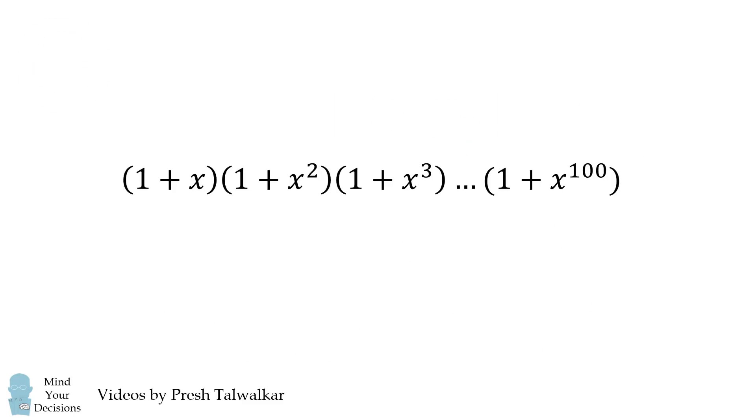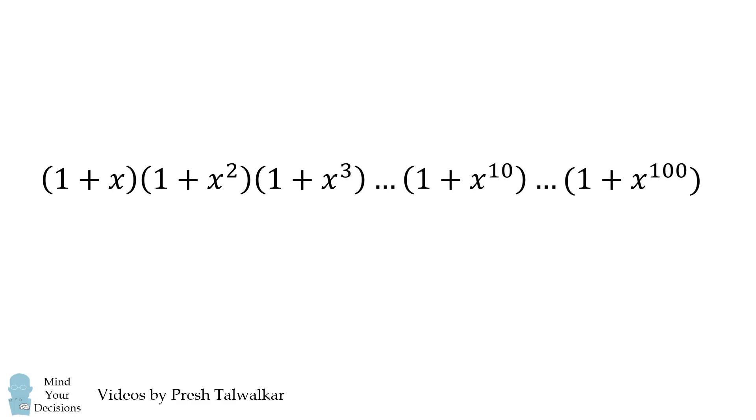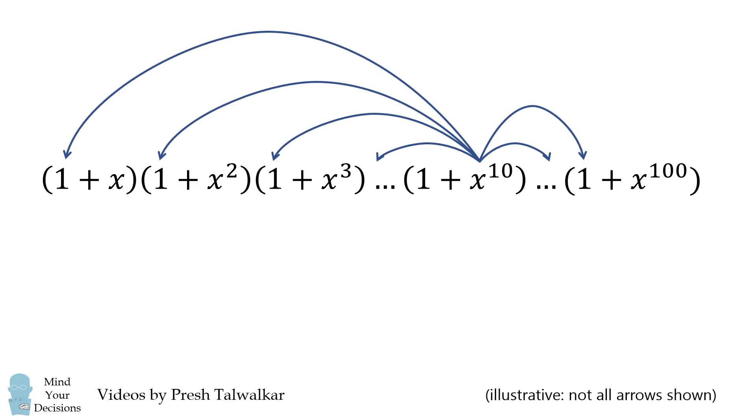Let's analyze this binomial product. Consider the term 1 plus x to the power of 10. What happens if we multiply x to the power of 10 by 1's in all of the other binomial terms? We'll end up with x to the power of 10.